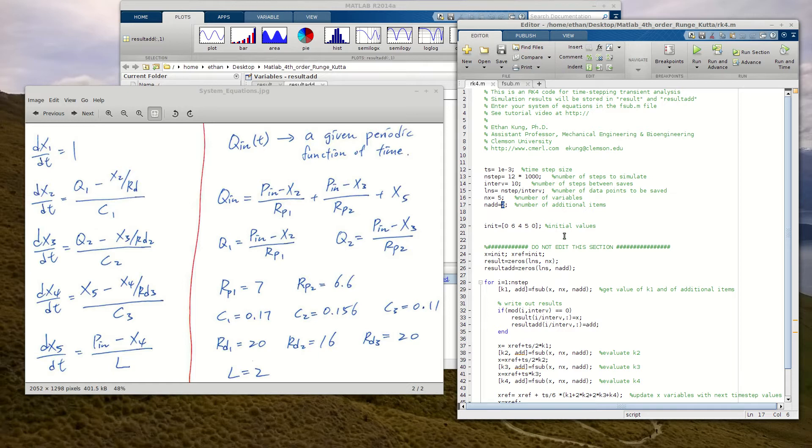And then here, you put in the initial values for your differential variables. From x1 to x5, all of these values have an initial value. So you want to specify what the initial values are here. So that's all you do with this rk4.m file.